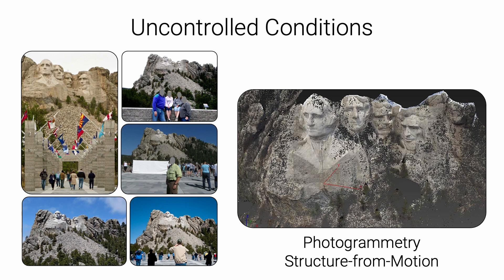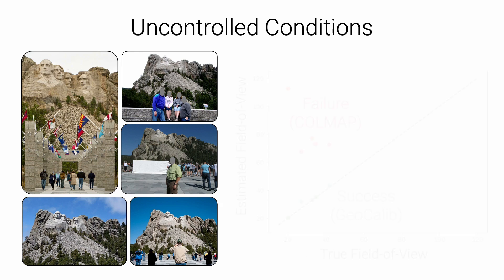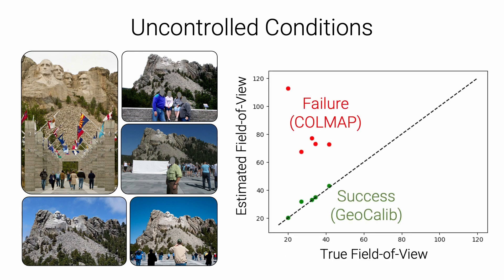When this is not possible, photogrammetry and structure from motion can estimate a calibration from images captured in uncontrolled conditions. However, this still requires multiple images observing the same scene, which is not always possible. Even then, the calibration can fail because of degenerate motions or structures, which are prevalent in crowd-sourced imagery.